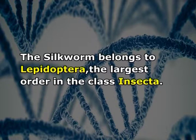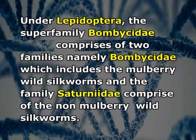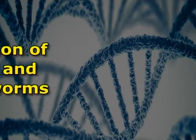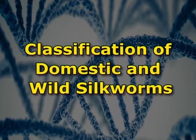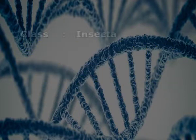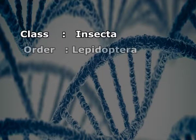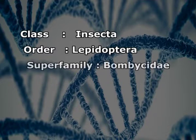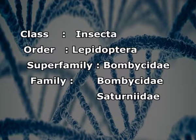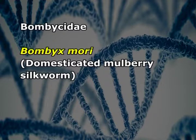The silkworm belongs to the order Lepidoptera, the largest order in the class Insecta. Under Lepidoptera, the superfamily Bombycoidae comprises two families: Bombycidae, which includes the mulberry wild silkworms, and the Saturniidae family, which comprises the non-mulberry wild silkworms. Looking at the classification of domestic and wild silkworms, they fall under class Insecta, order Lepidoptera, and superfamily Bombycoidae, under which two families are given — Bombycidae and Saturniidae.